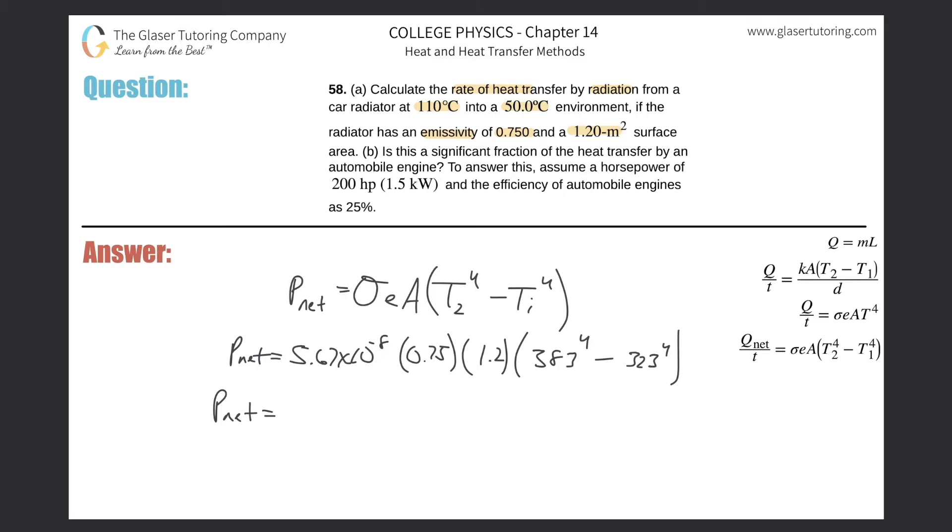Multiplied by parenthesis: 383 raised to the fourth minus 323 raised to the fourth. We get about 543 watts.